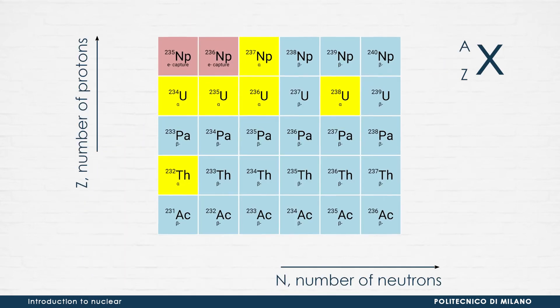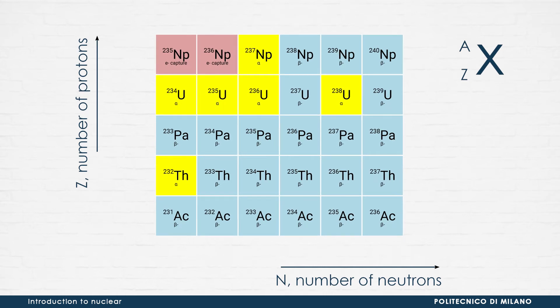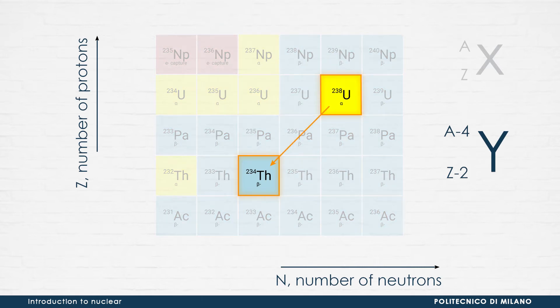When a nucleus decays by emitting an alpha particle, it transforms into another nucleus. Its mass number A decreases by 4, and the atomic number Z by 2. For example, uranium-238 decays to thorium-234 by emitting an alpha particle.